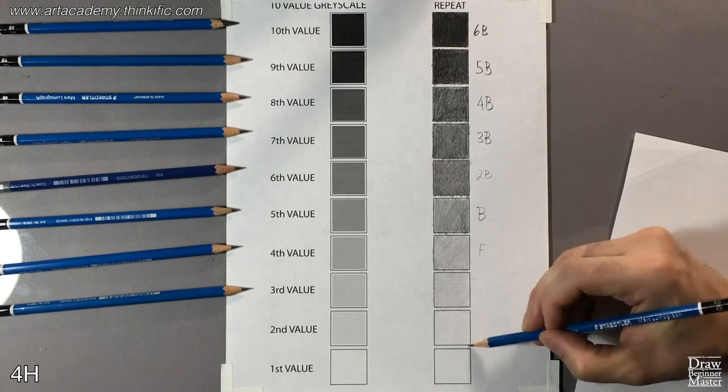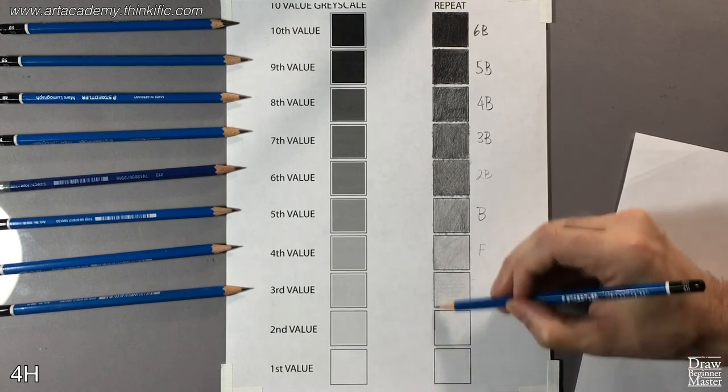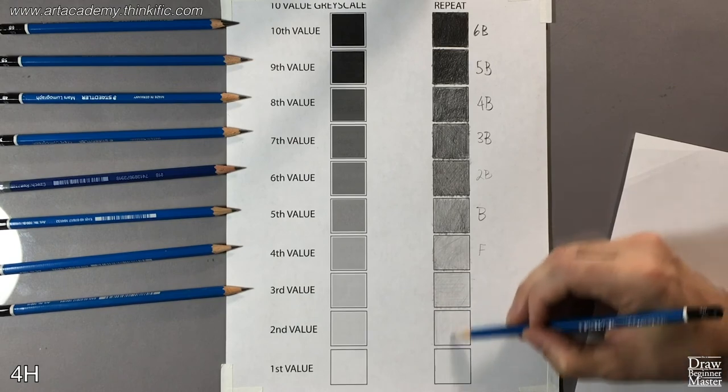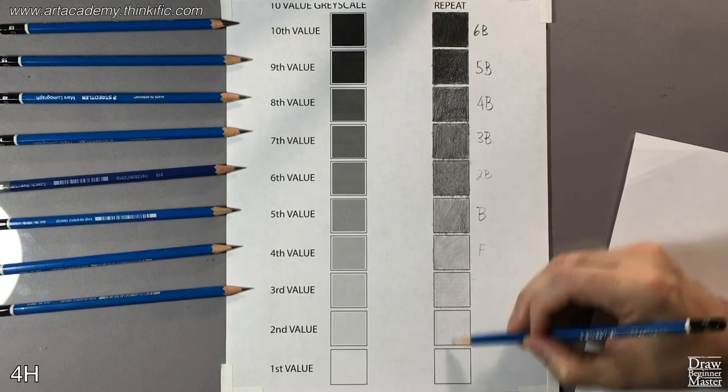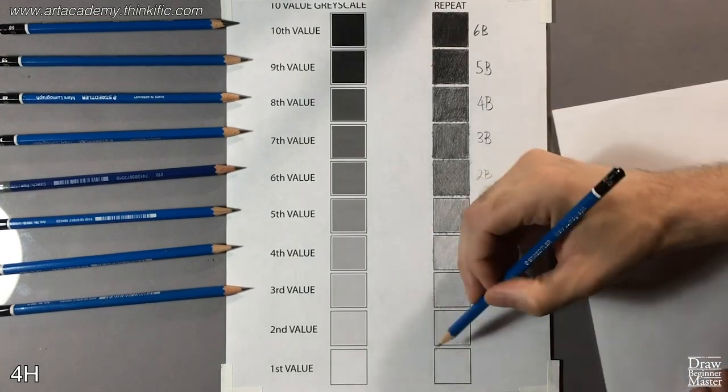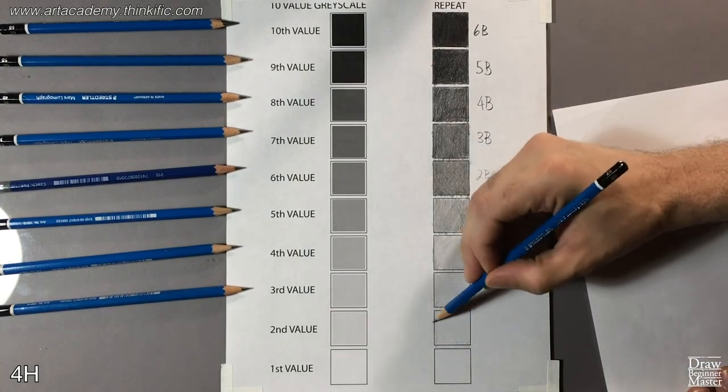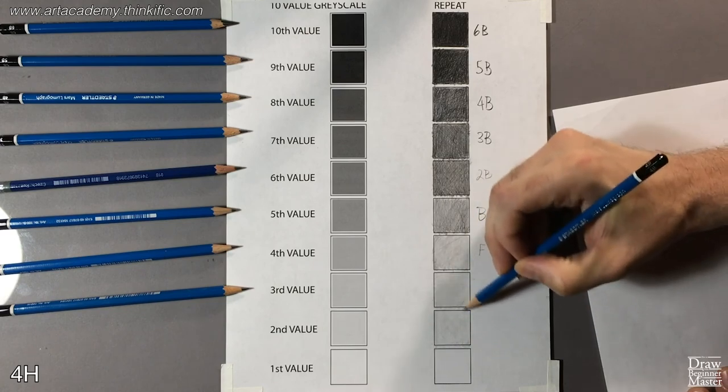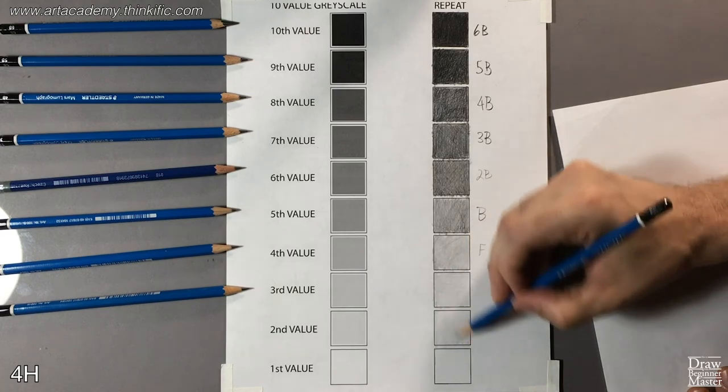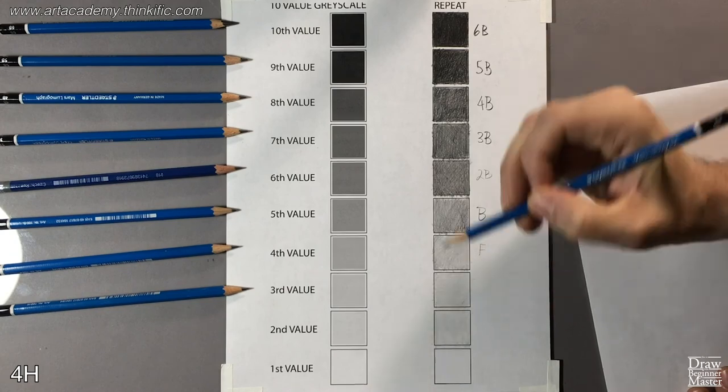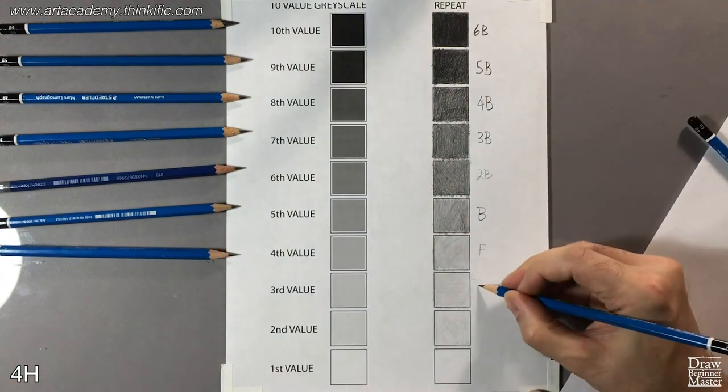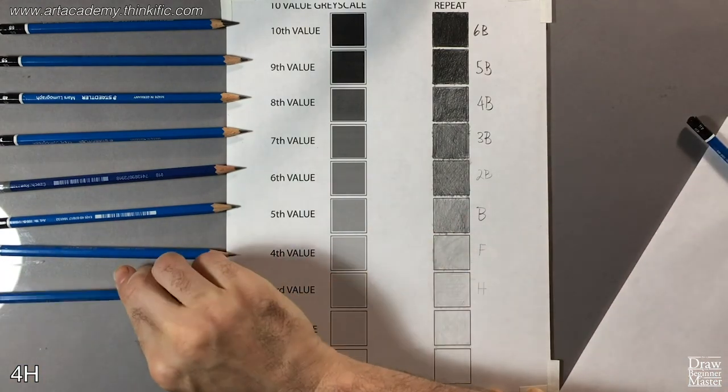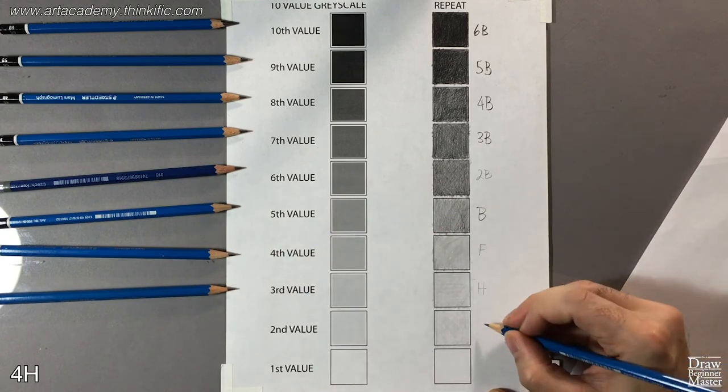And finally, as you can see, I've switched to a 4H pencil to shade in the 2nd value square. This lead is so hard I doubt it could go higher than 2nd value without ripping through the paper. But, now that you know your lead weights, could you imagine using a 6B lead to shade in this square? It would be impossible. Okay, that's 2nd value, and 1st value is just the white paper. Be sure to label the last two boxes with the pencil leads you use to shade them.